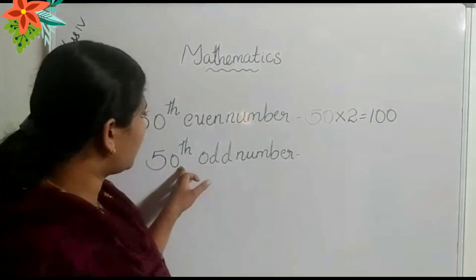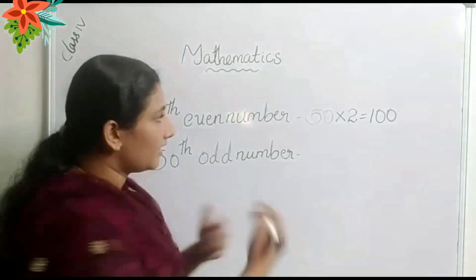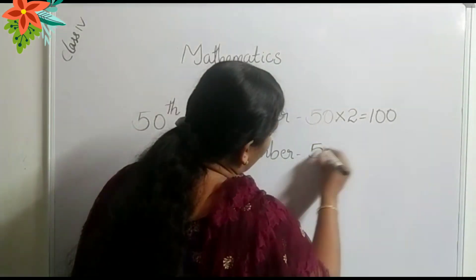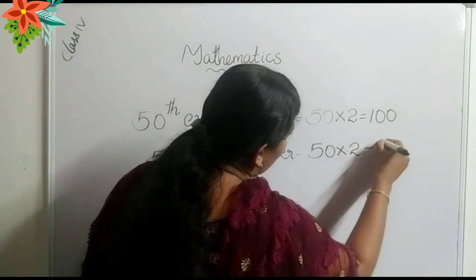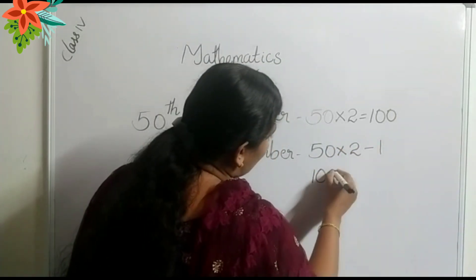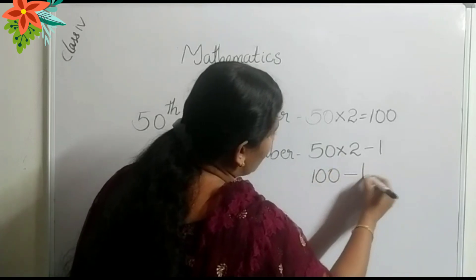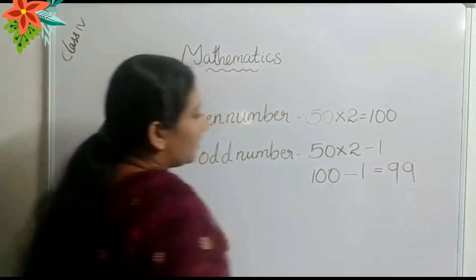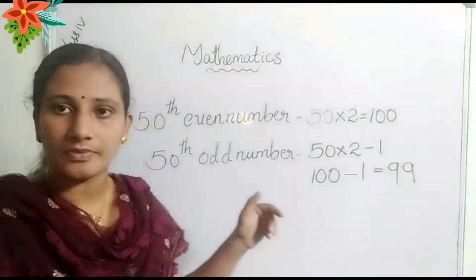Then what is the fifteenth odd number? How do we find? Let us do like this: fifteen into two minus one. Fifteen into two is thirty. Thirty minus one — that is twenty-nine. That is the fifteenth odd number.